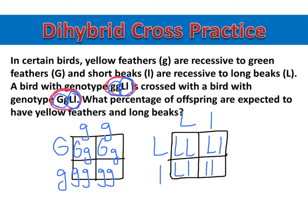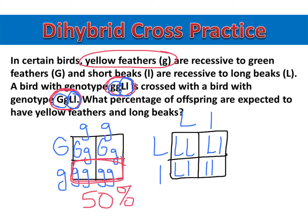Let's look at our question: what percentage of offspring are expected to have yellow feathers and long beaks? Yellow feathers is the recessive trait, so I need the birds to be homozygous recessive. I can see that these two boxes are homozygous recessive offspring, and that would be 50%. Long beaks are the dominant trait, so as long as they have at least one dominant allele, they'll end up with a long beak. Those three boxes all show offspring with at least one dominant allele, so three boxes would be 75%.